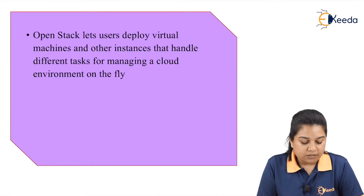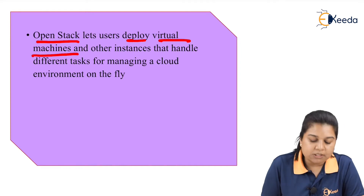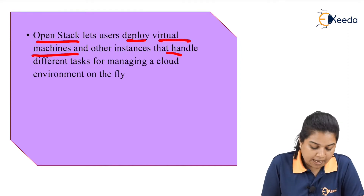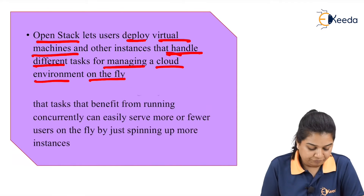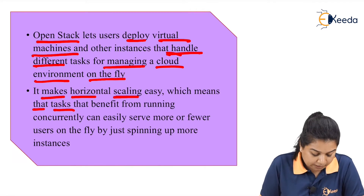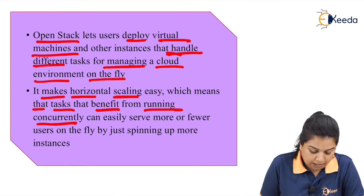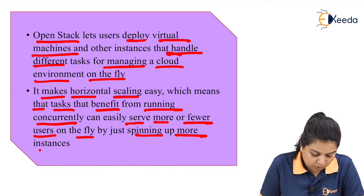OpenStack lets us deploy virtual machines and other instances that handle different tasks for managing a cloud environment on the fly. It makes horizontal scaling easy, which means that tasks that benefit from running concurrently can easily serve more or fewer users on the fly by just spinning up more instances.